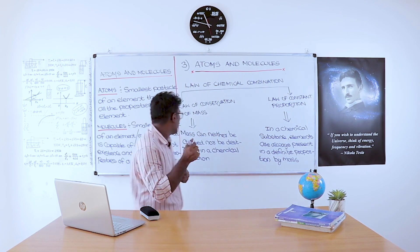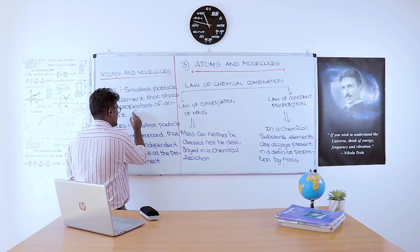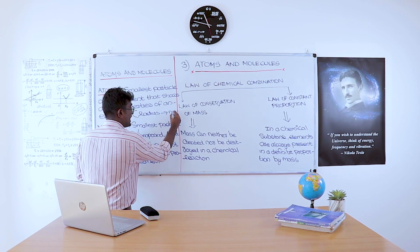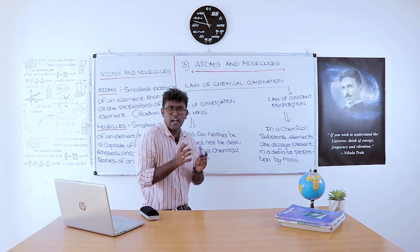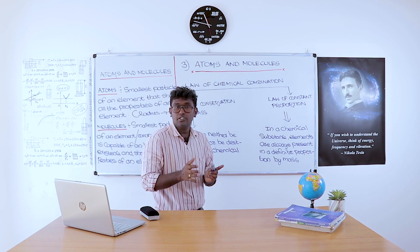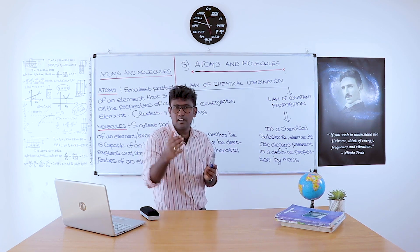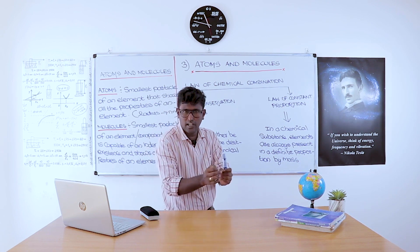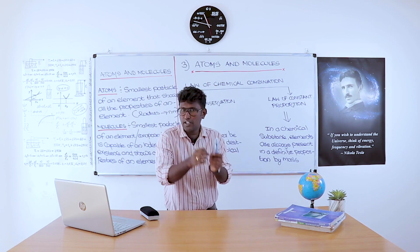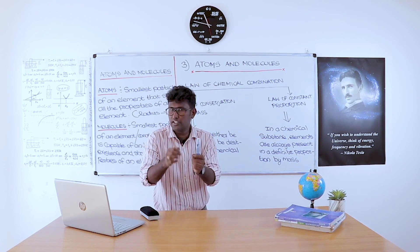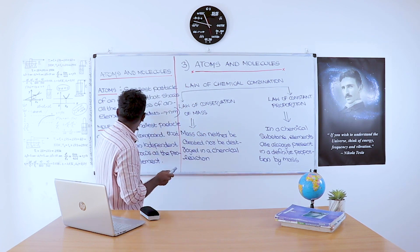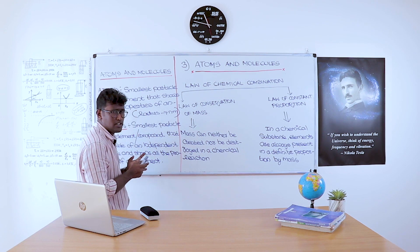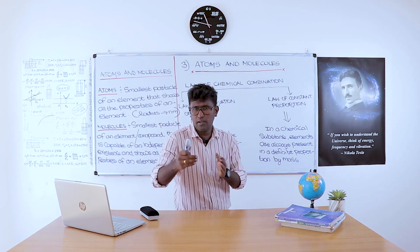One thing regarding the atom is that its radius can be measured in terms of nanometers. Nanometer means 10 raised to minus 9 meters — it is a very small particle. So the smallest particle of an element that shows all the properties of an element is called an atom, and it is the building block of all elements.